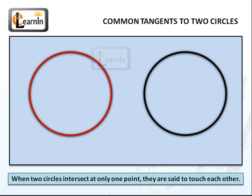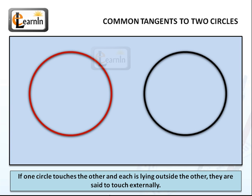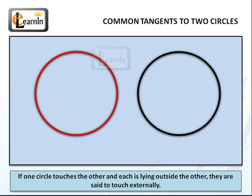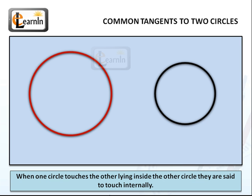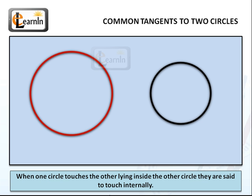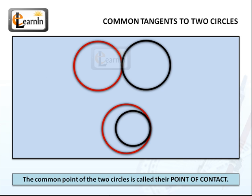Let's look at the second case first. When two circles intersect at only one point, they're said to touch each other. There are two sub-cases: if the circles touch each other and each is lying outside of the other, they're said to touch externally. The other case is where one circle touches the other while lying inside it — here they're said to touch internally. Either way, the two circles touch at only one point, and that point is called their point of contact.